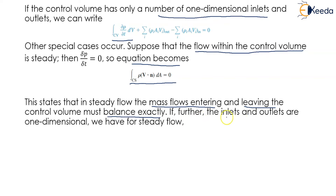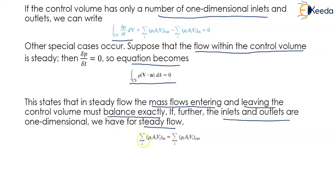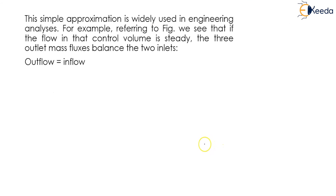If further the inlets and outlets are one-dimensional, we have for steady flow: the summation of ρAV for inlets is equal to the summation of ρAV for outlets.